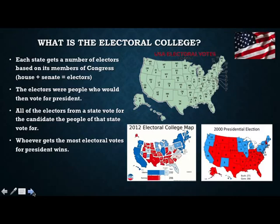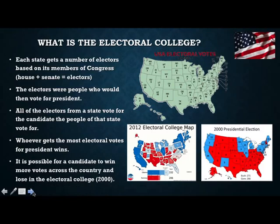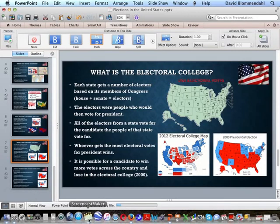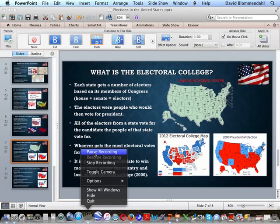Whoever gets the most electoral votes wins. There are 538 total electors — the number of members of Congress plus 3, because Washington DC is given 3 electoral votes — so the magic number is 270. It is possible for a candidate to win more votes across the country and yet lose in the Electoral College, and that's what happened in the year 2000. The person who won the election actually lost what we call the popular vote — he got 600,000 fewer votes than the other candidate.